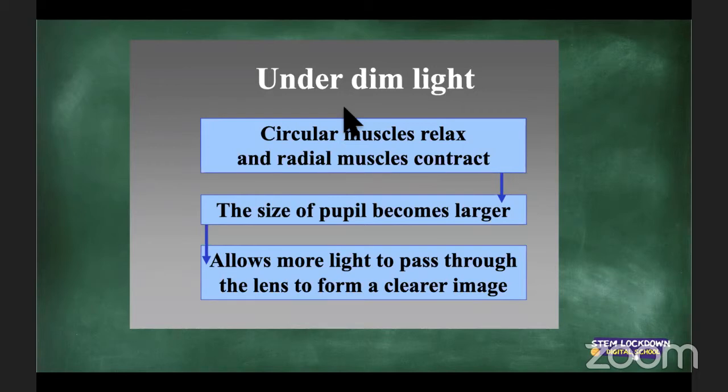Why do some people have two differently colored eyes? That is just genetics — heterochromia. Brown eyes are dominant; any other color is recessive, and it just depends on the genes you have.